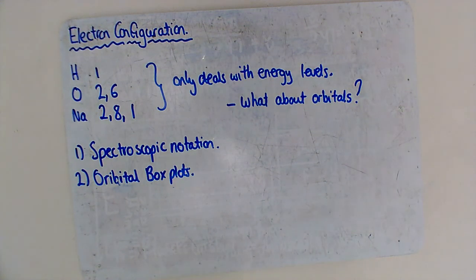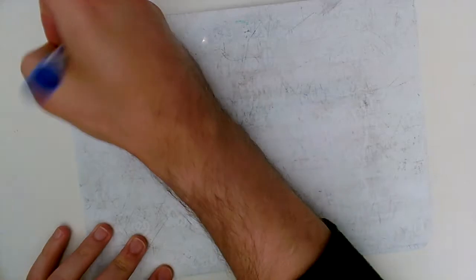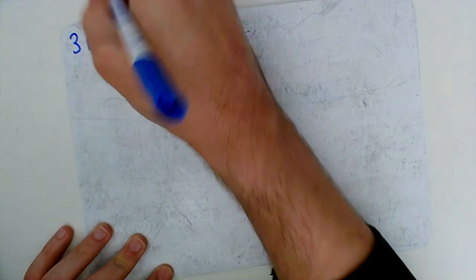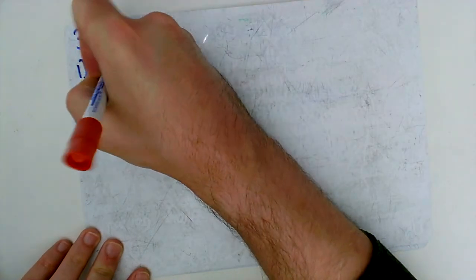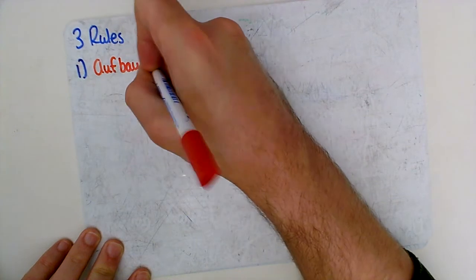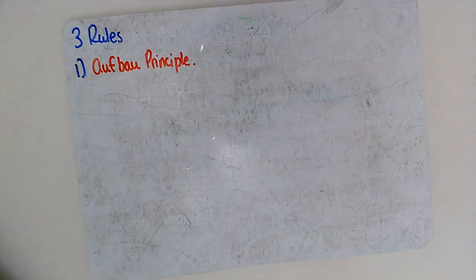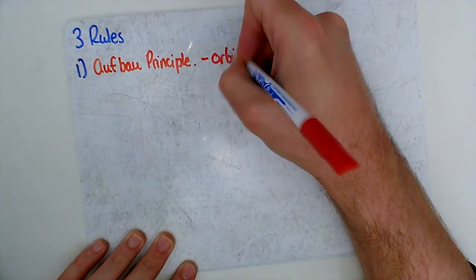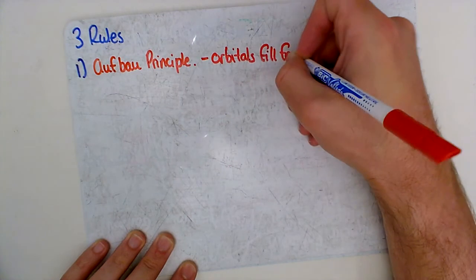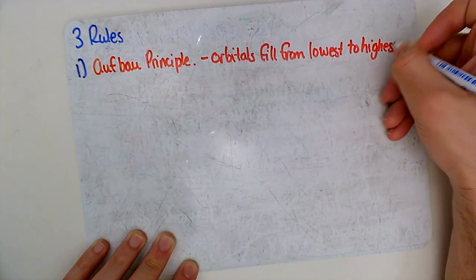Before we do that, we need to know that there are three rules for how we do electron configuration. The first rule — probably the most important — is called the Aufbau principle. The Aufbau principle states that you cannot have orbitals filling in a random order. Orbitals fill from lowest to highest energy.